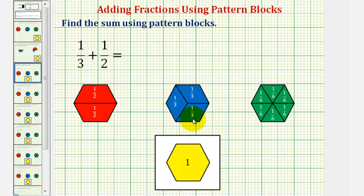If we cut or denominate the whole into three equal partitions or three equal pieces, as we see here, each blue pattern block is equal to one-third or each blue rhombus is equal to one-third.